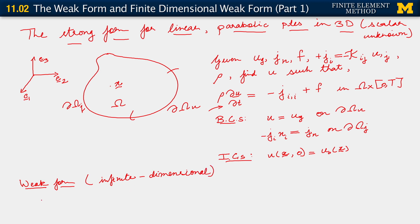In order to get to that, we consider W belonging to V, where V consists of all functions such that W equals 0 on the Dirichlet boundary partial omega_u — our same weighting function as before. We essentially multiply and integrate, and we'll do that in the next slide.